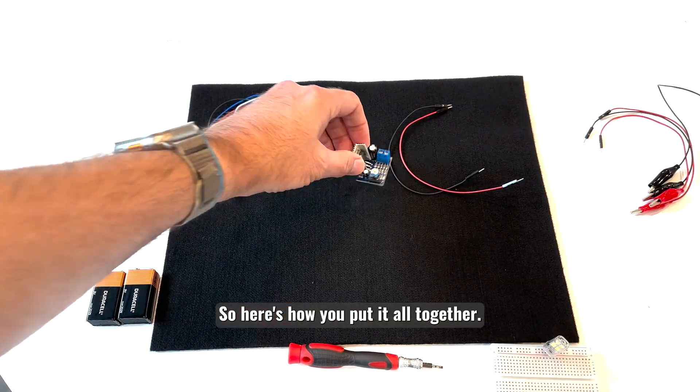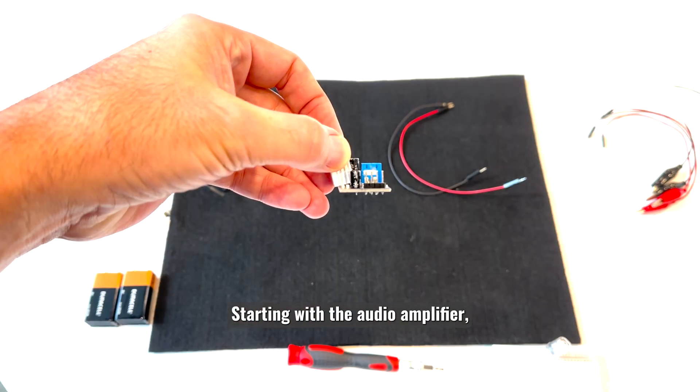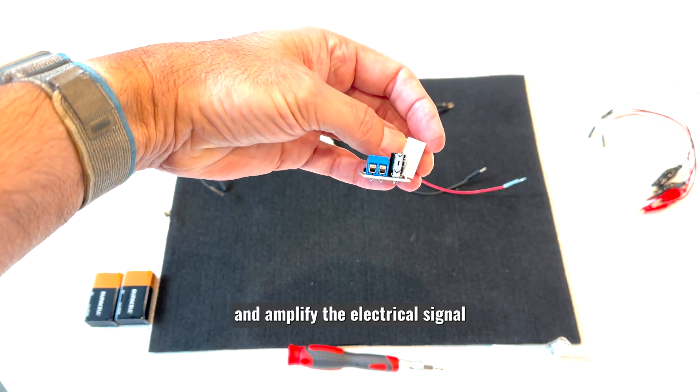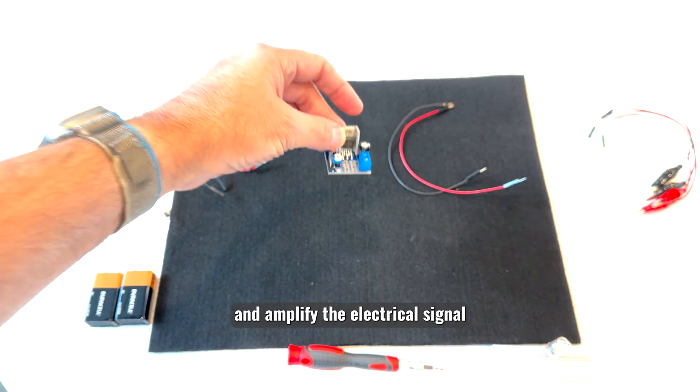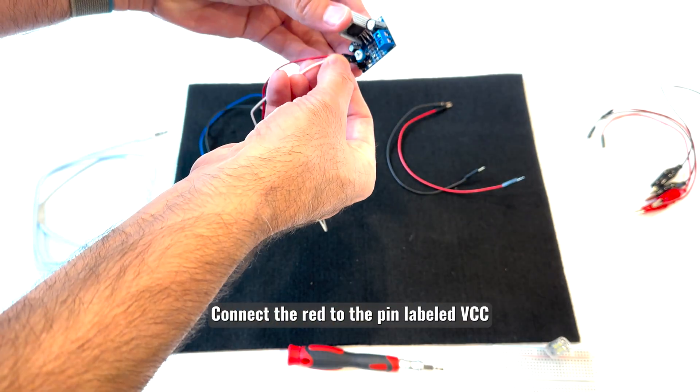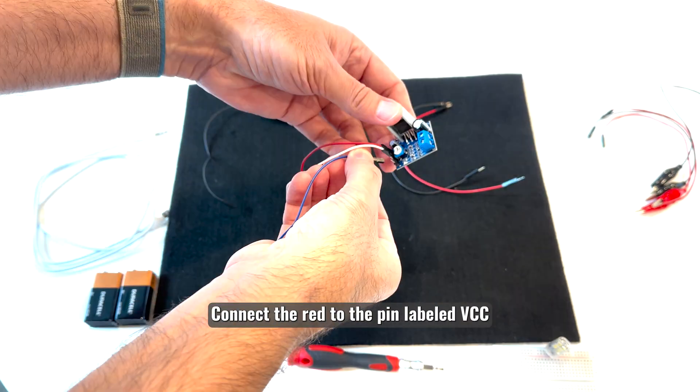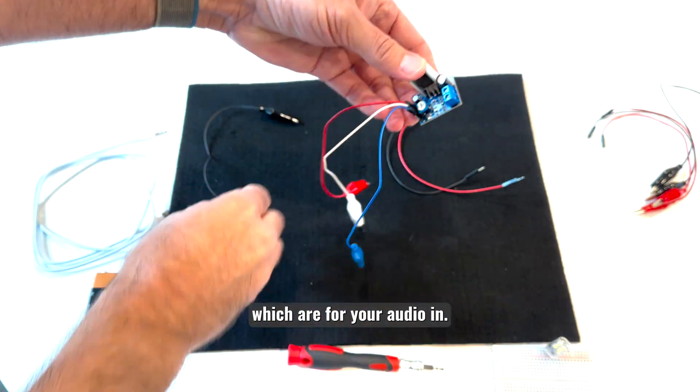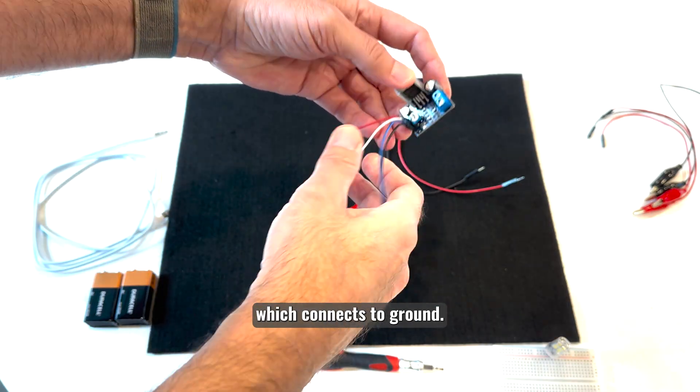So here's how you put it all together. Starting with the audio amplifier, which will take sound from your device and amplify the electrical signal. You'll need four female to alligator clip jumper wires. Connect the red to the pin labeled VCC, and the two middle pins which are for your audio in, and finally the black wire which connects to ground.